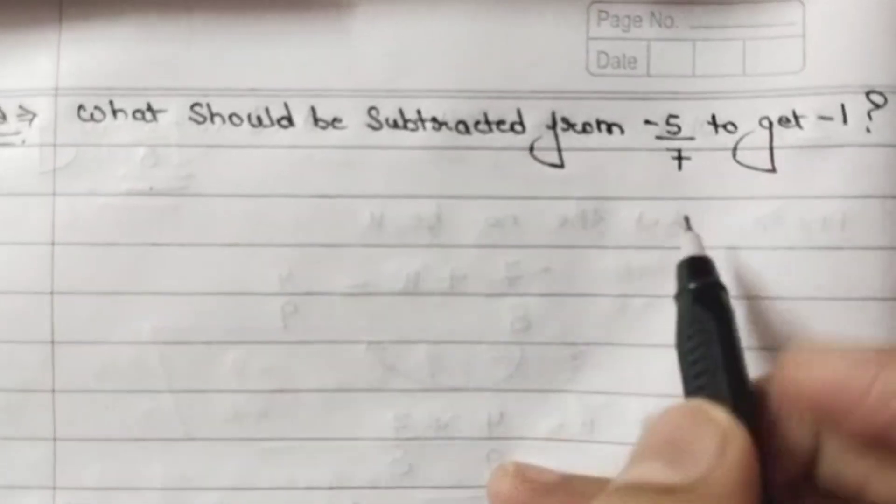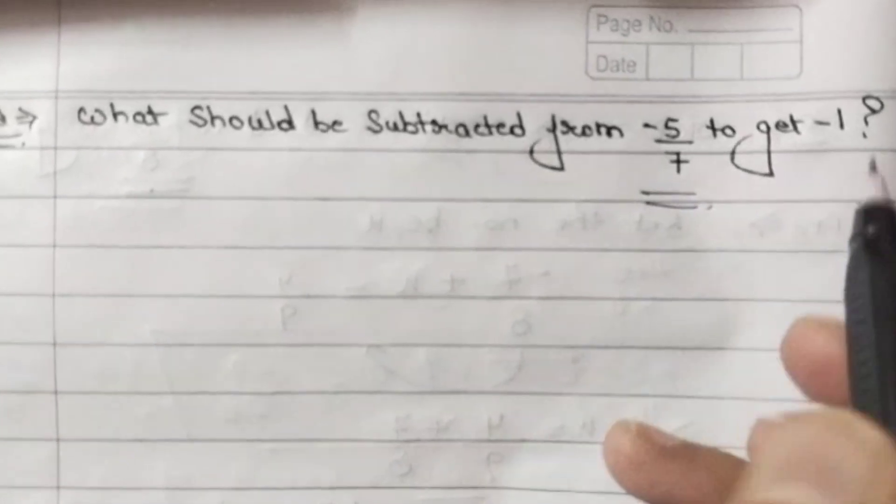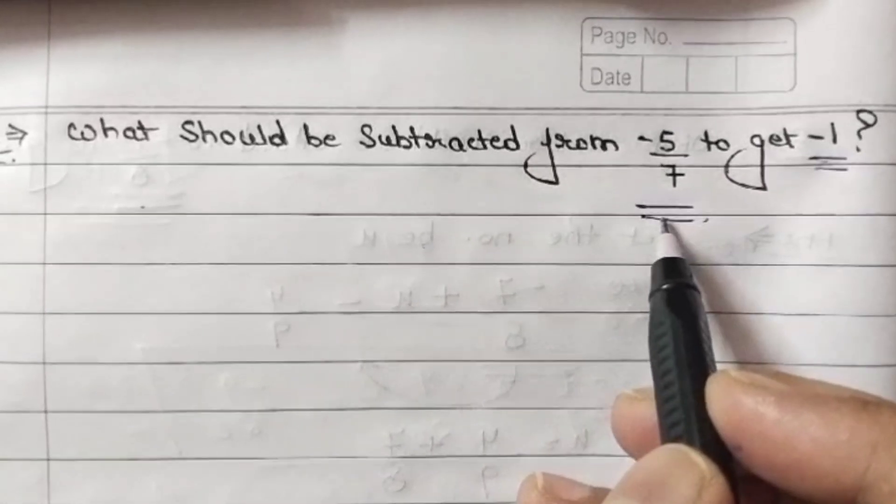Next question is: what should be subtracted from -5/7 to get -1?